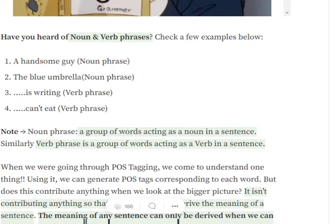Let's look at these noun and verb phrases: a handsome guy, a blue umbrella, is writing, can't eat. A noun phrase is a group of words acting as a noun. Usually we have a single noun in a sentence, but noun phrases means it's a collection of words that is acting as a single noun. For example, a handsome guy is at the door. In this case, a handsome guy is acting as a single noun, called a noun phrase. Similarly, a verb phrase is a group of words acting as a verb in the sentence.